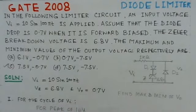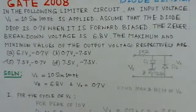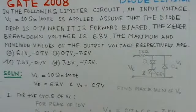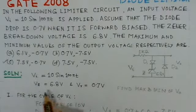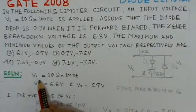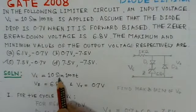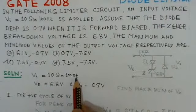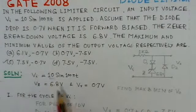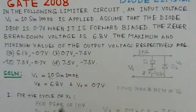There are four options about the minimum and maximum values for the output that we have to find out. What is given here is the value of VI, the input is 10 sin 100πt. That is the peak value of the input being given here.